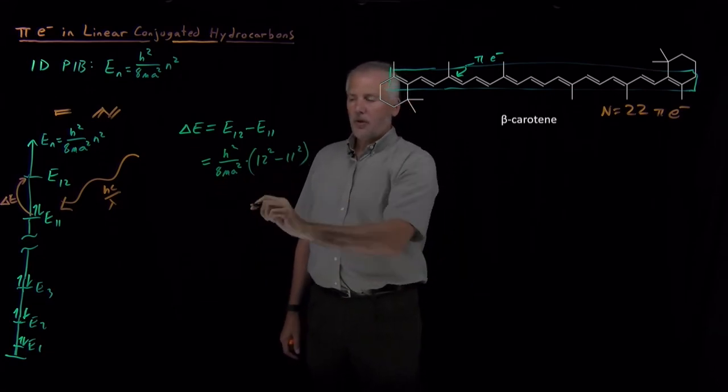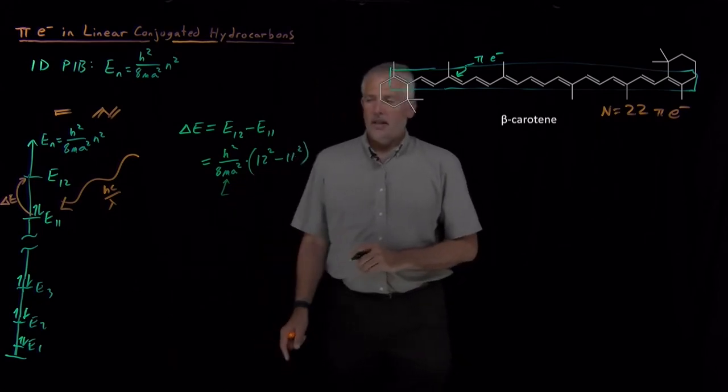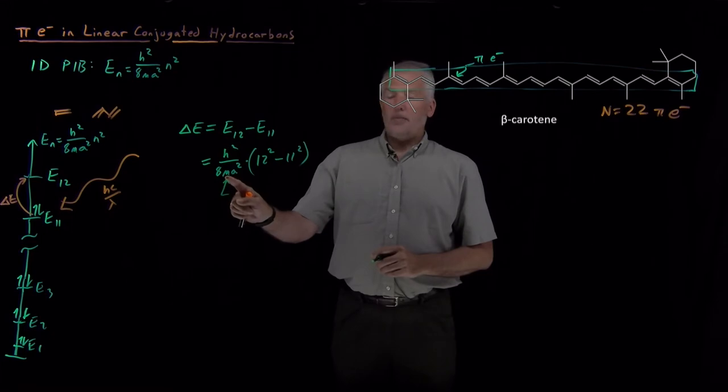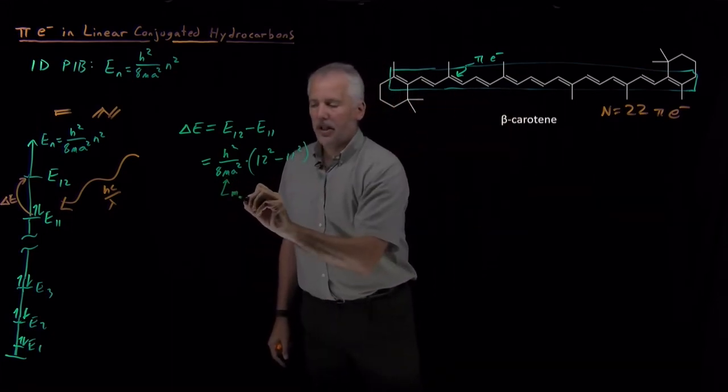So to proceed any further, we need to know what are these masses and box length. The mass, this is the mass of the particle that's confined to the box. So our particle confined to the box is the pi electron, so this is the mass of an electron.